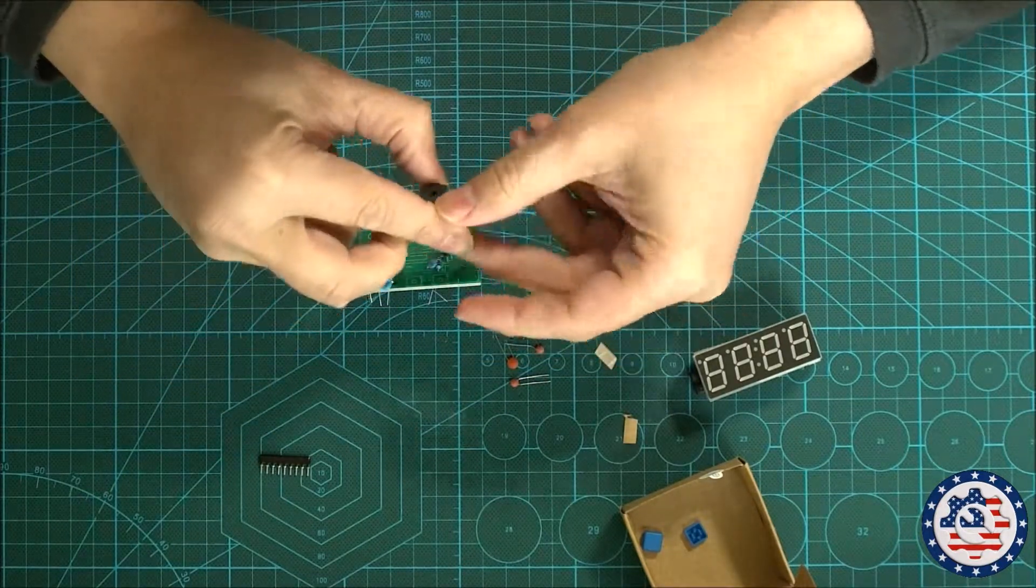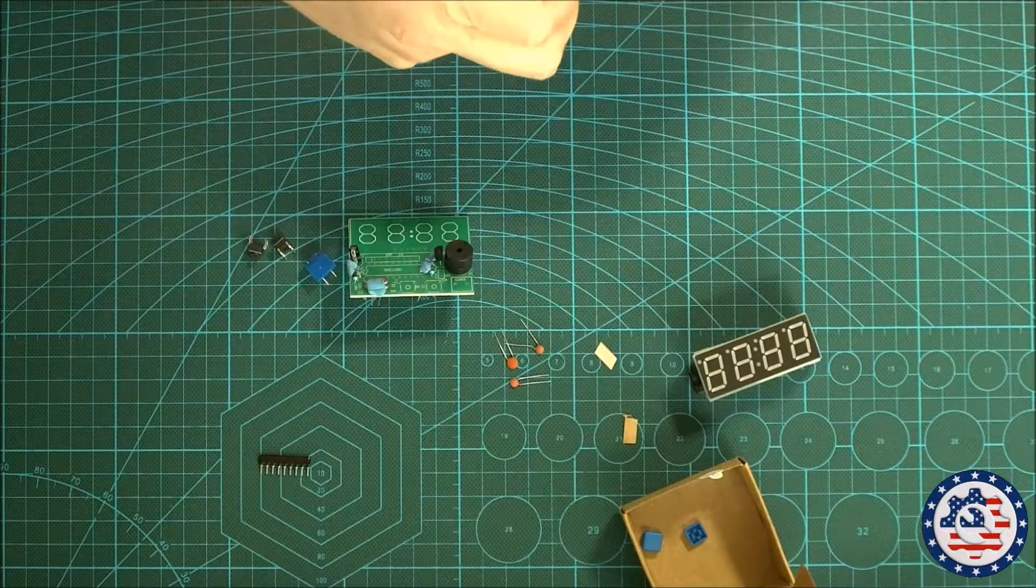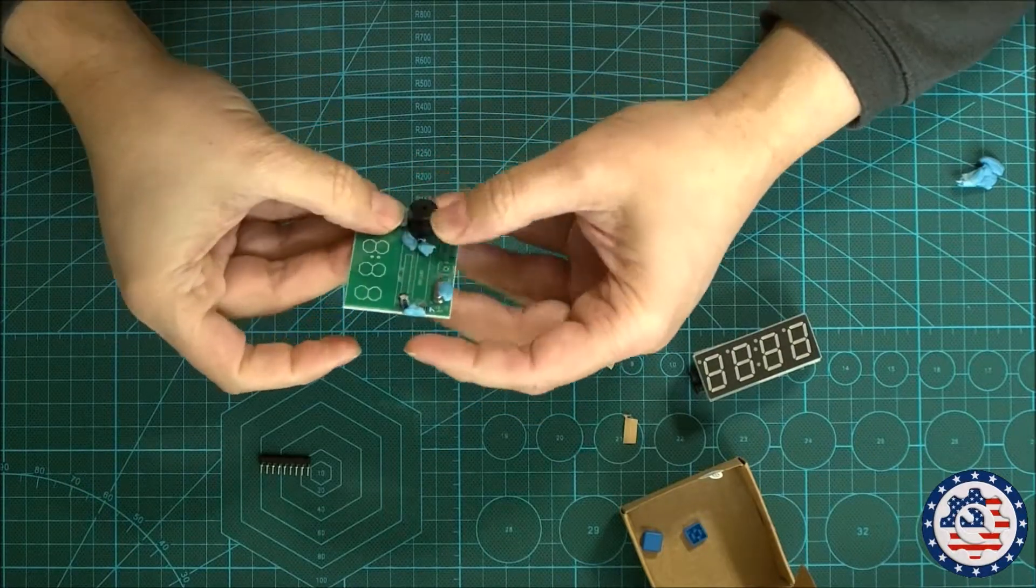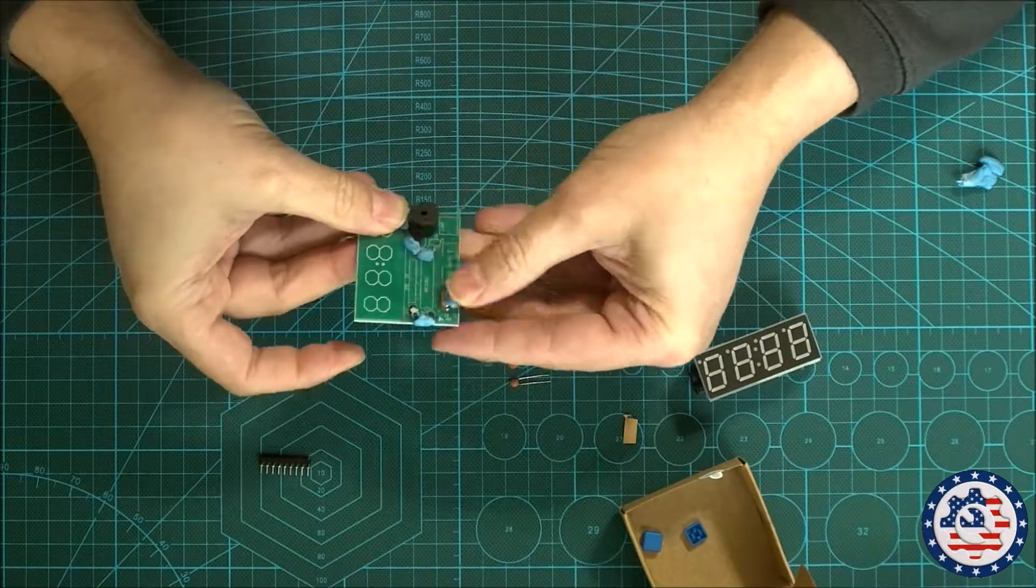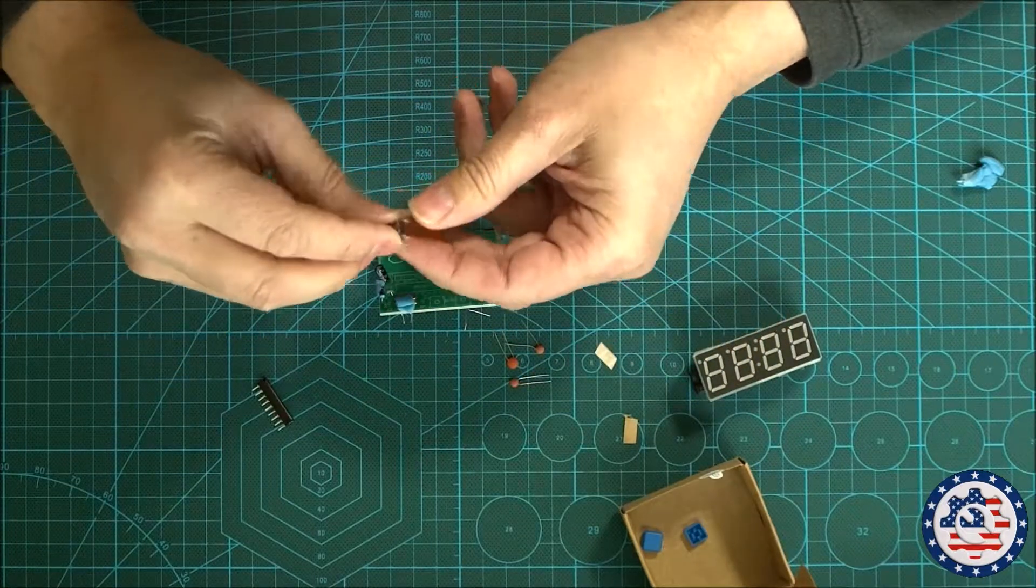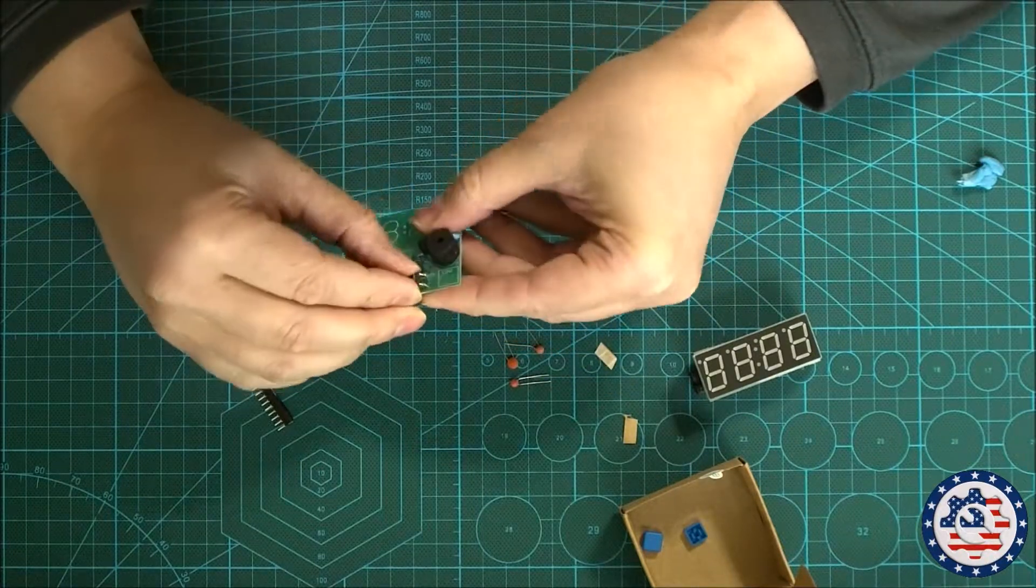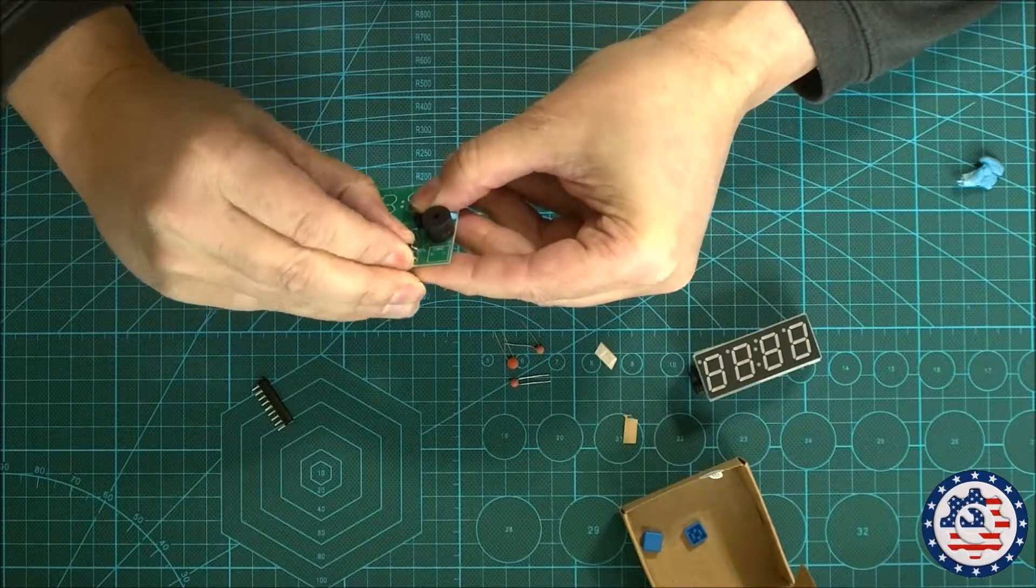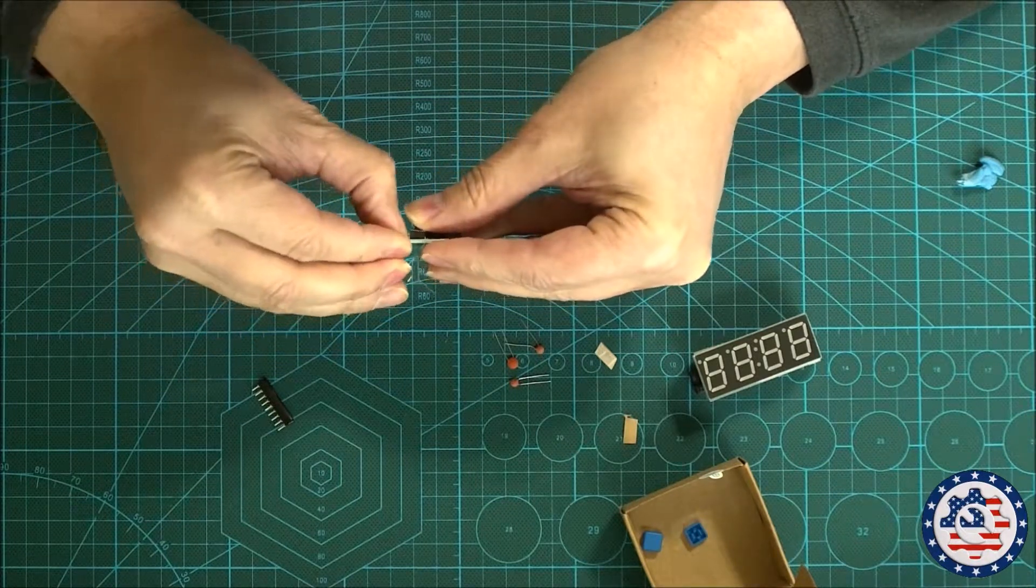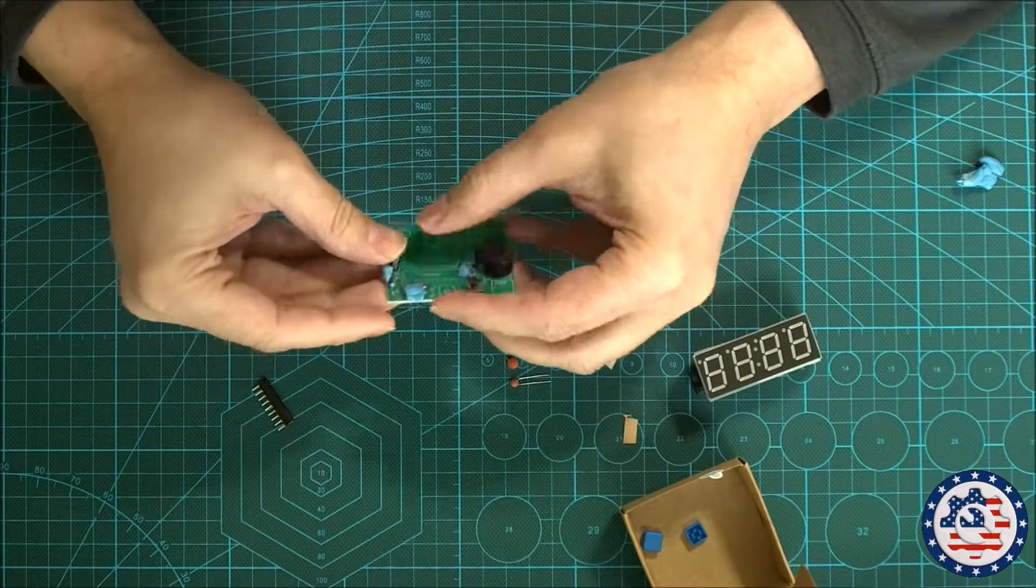Let's put the buzzer in. And again, we need to make sure the polarity on the buzzer is correct. Get some more tack. Hold that in place. Put the buttons in place. Again, with the buttons, you've got to be careful to put them in the right way. They're actually only going the one way, but it's still important to make sure you put them in the right way, because two of the pins are shorted by default. And if you get them in the wrong way, the circuit's not going to work. It's going to be as if the button is permanently pressed.